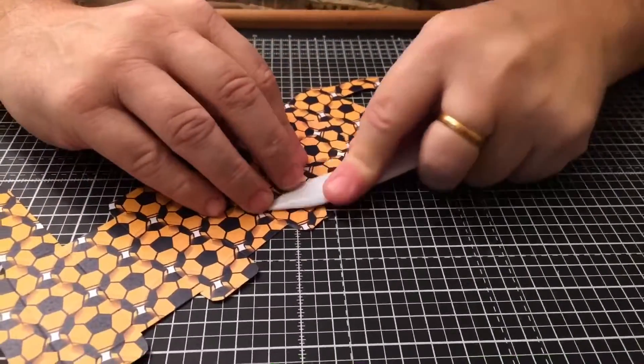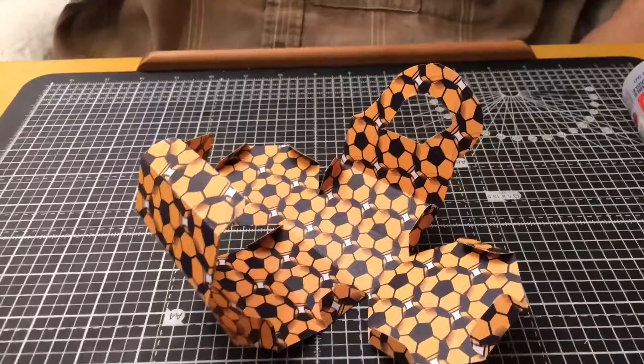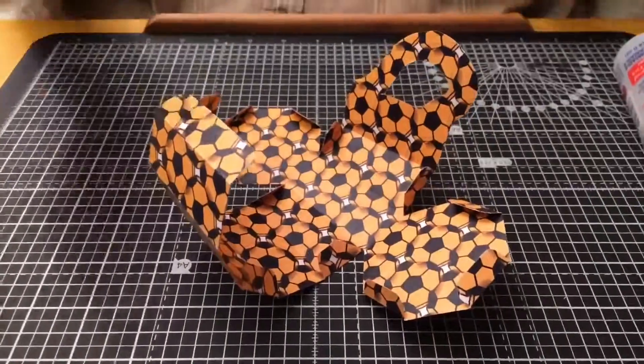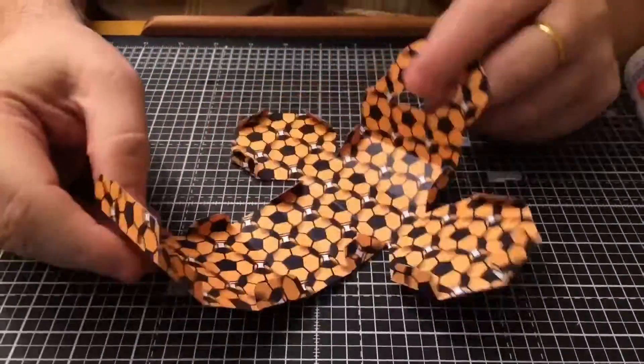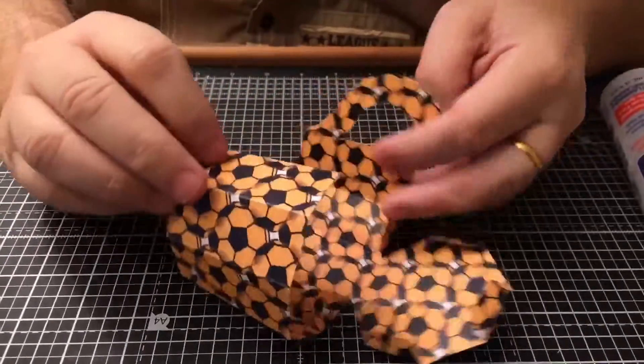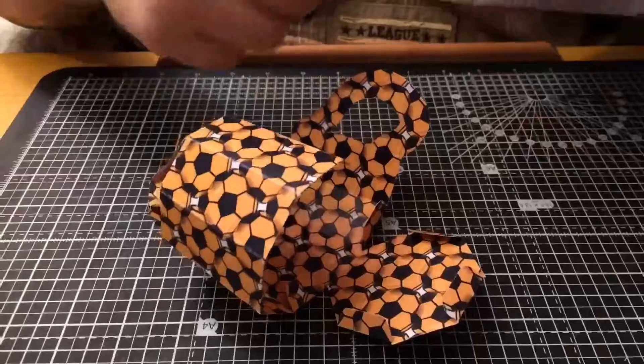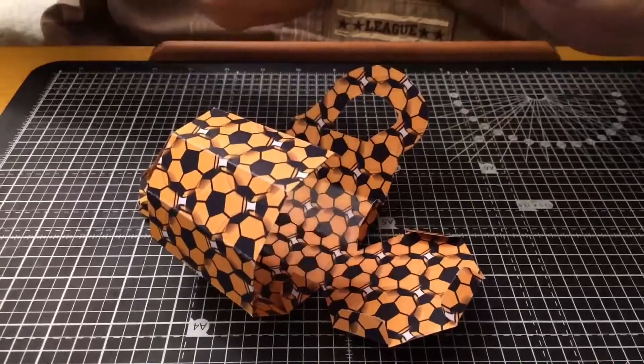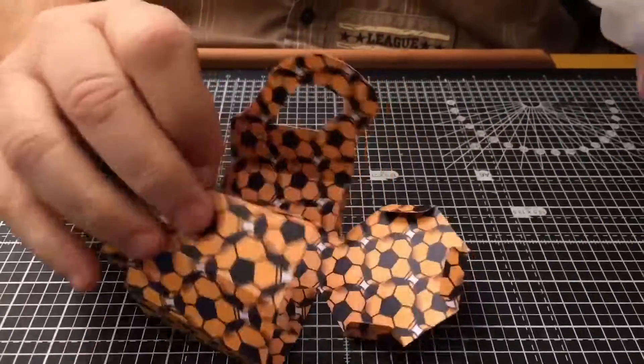Just go around the whole design. Now I've creased all the areas that need creasing. There's only one or two bits of gluing you need to do. This little flap here is going to stick inside there, so just put a little bit of glue on the outside here.